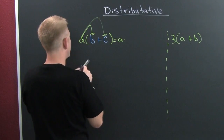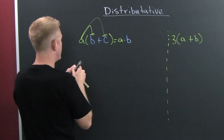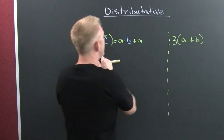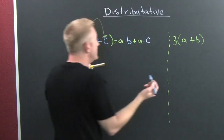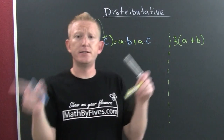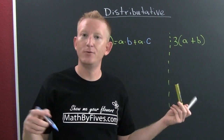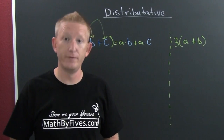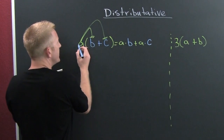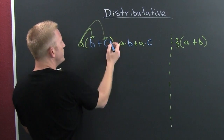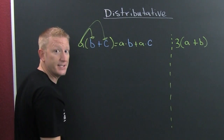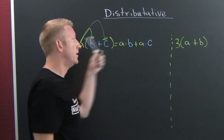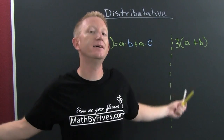You're gonna end up with a times b plus a times c — where a gets distributed evenly over addition. This is the distributive property of multiplication over addition. We're taking this multiplication and it's going over the addition, and we end up with a times b plus a times c.